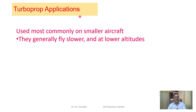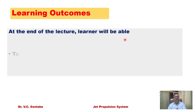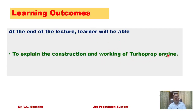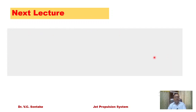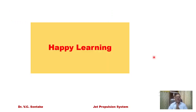Turboprop engine applications: they are used mostly on smaller aircraft that generally fly slower and at lower altitudes. The learning outcome of this video is that the learner will be able to explain the construction and working of the turboprop engine. In the next lecture, I will be discussing the construction and working of ramjet and pulse jet engines. Thank you for your passionate listening and kind attention. Happy learning.